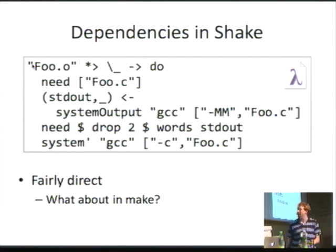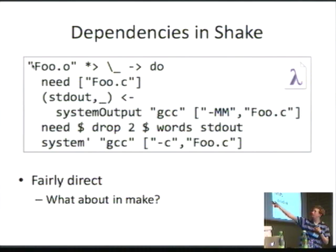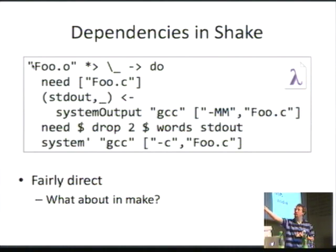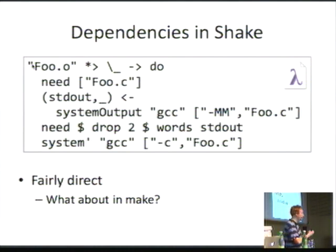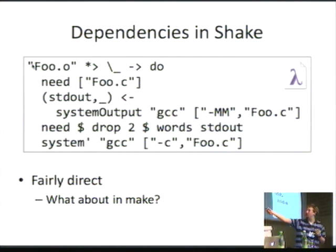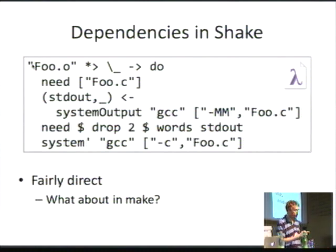Then I just run GCC-MM over foo.c, get the standard output, do some text munging to get the headers, and then I need all the headers that foo.c has imported. If build systems were being designed sensibly from the start, I wouldn't be explaining this — it's just obvious. I look at foo.c, see what headers it imports, and if they change, rebuild. At the very end, I just compile it with GCC. Fairly direct — basically what you'd expect if you didn't know anything about build systems.